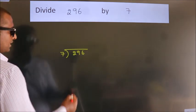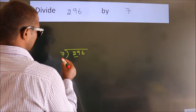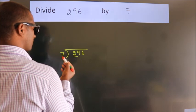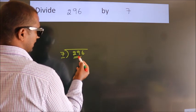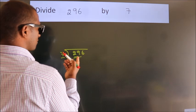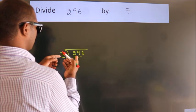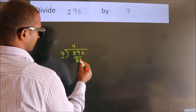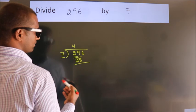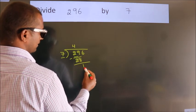Next. Here we have 2. Here 7. 2 is smaller than 7, so we should take 2 numbers. 29. A number close to 29 in the 7 table is 7 fours, 28. Now we should subtract. We get 1.